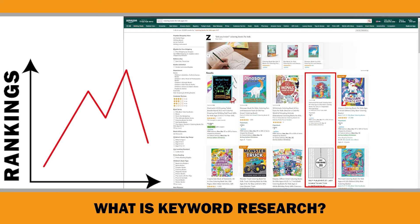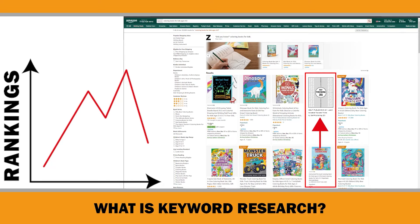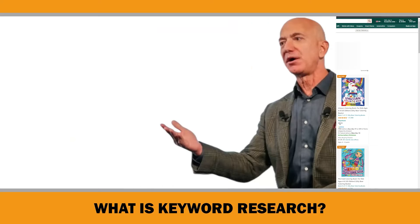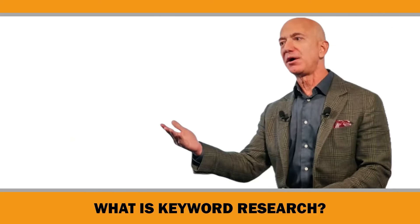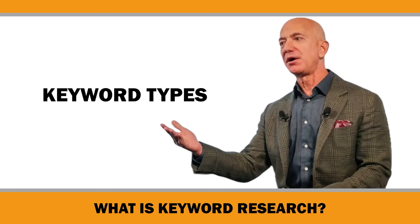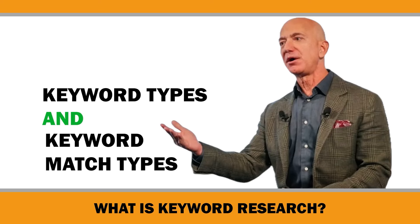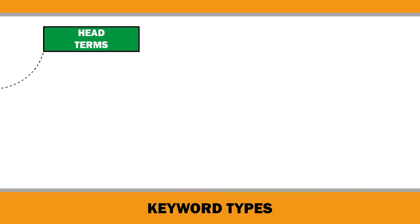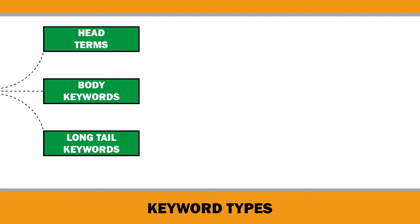By doing so, your products will have a higher chance of being organically ranked at the top of the search results, which can help increase visibility and sales. Before going into detail about my updated KDP keyword research strategies for 2024, I would like to clarify the definition of different keyword types and keyword match types for e-commerce. When it comes to keyword types, we can divide them into three main categories: head, body, and long tail.